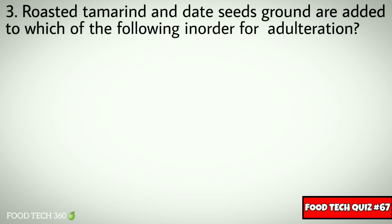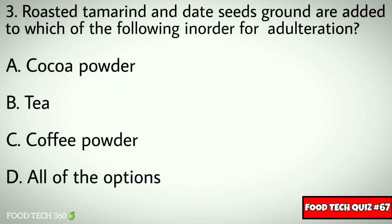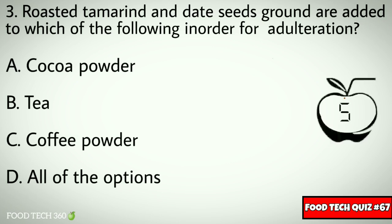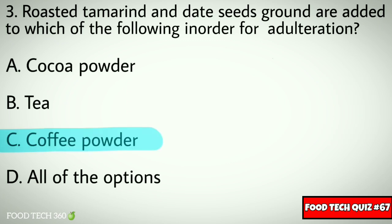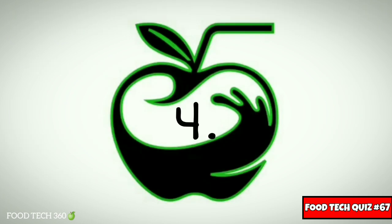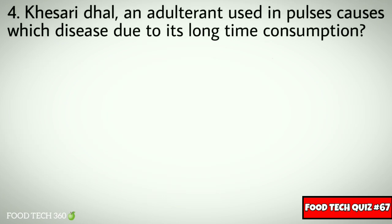Question number three: roasted tamarind and date seeds ground are added to which of the following for adulteration? Options: A) cocoa powder, B) tea, C) coffee powder, D) all of the options. Correct answer: C) coffee powder.